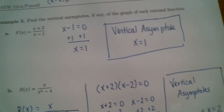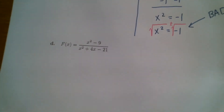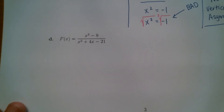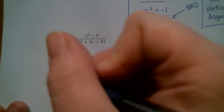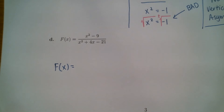Last one — Part D. Part D is going to be very informational; there's a lot going on with this one. f of x equals x squared minus 9 — that is the numerator. The denominator is x squared plus 4x minus 21. We need to factor the top and factor the bottom.